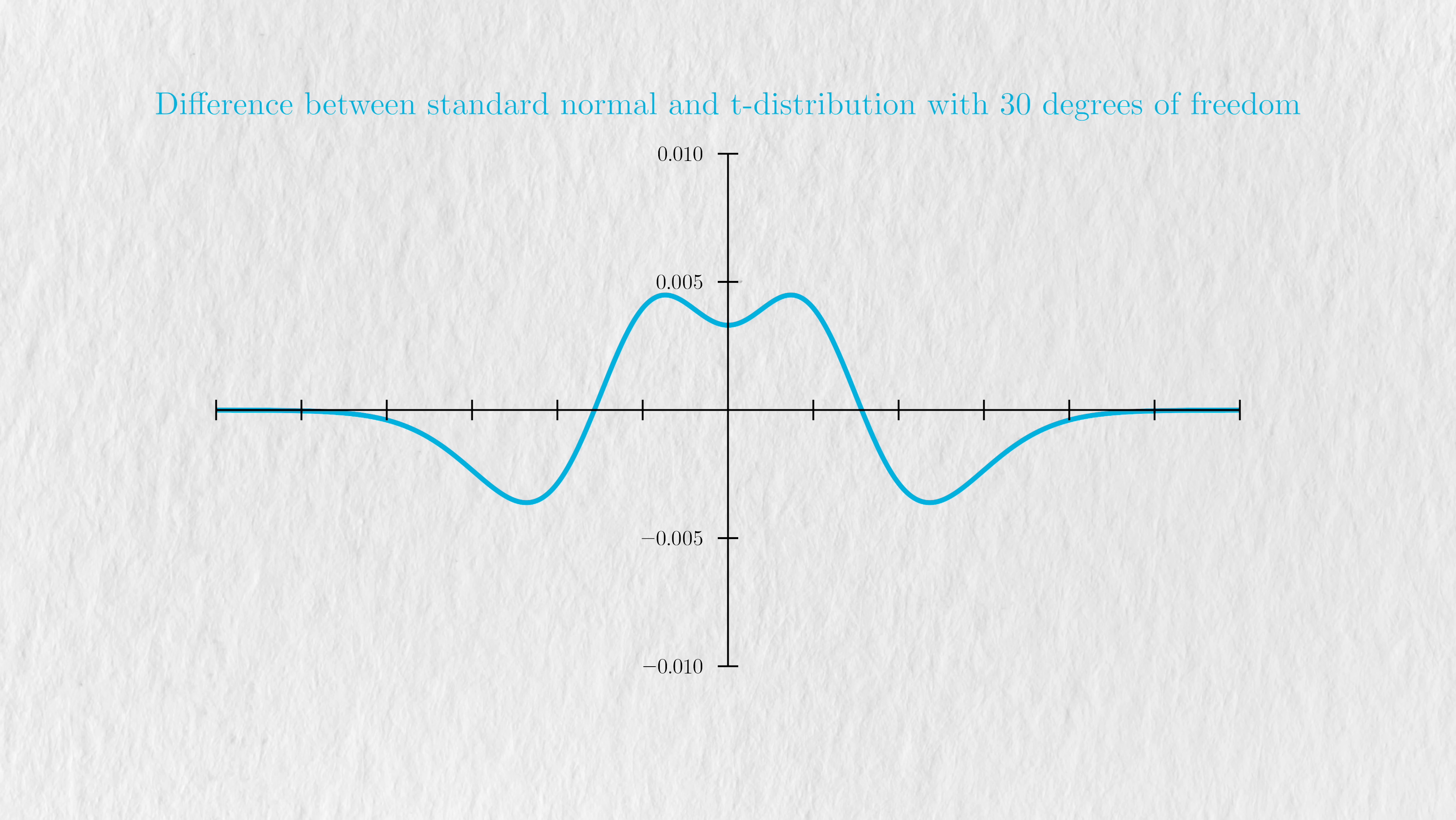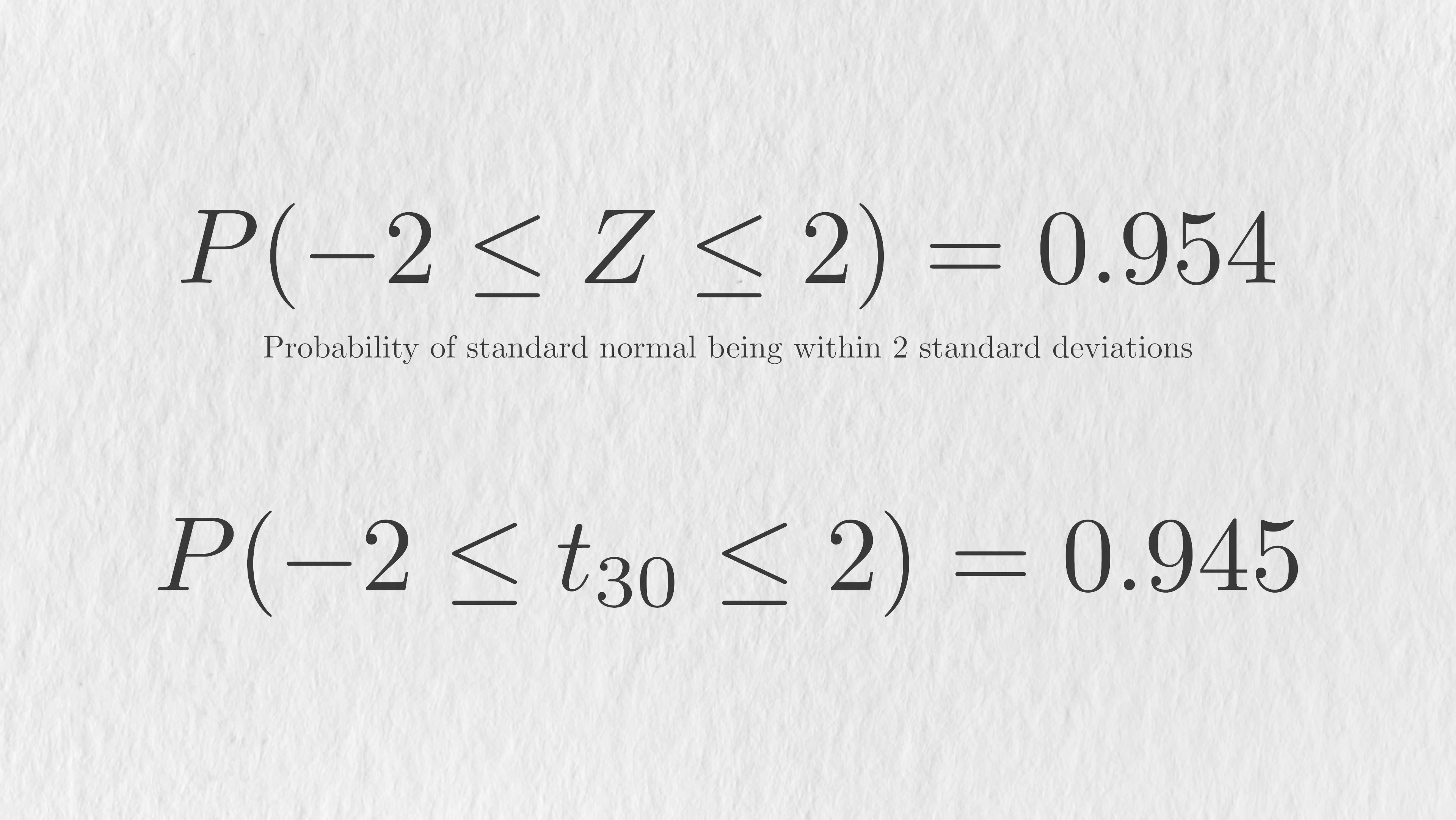We can describe this in terms of probabilities as well. A well-known characteristic of the standard normal is that more than 95% of the values we'll see are between negative 2 and 2. If we were to take these two values and see how likely this range of values is under a t-distribution with 30 degrees of freedom, we'll get a similar value.